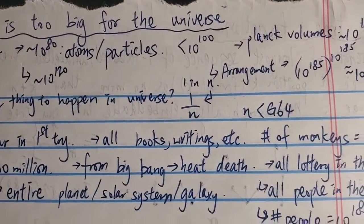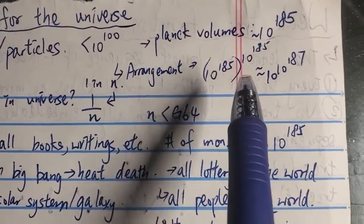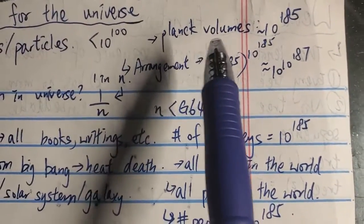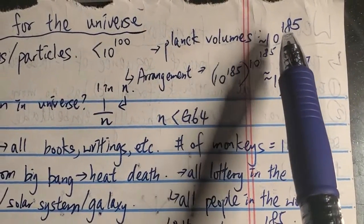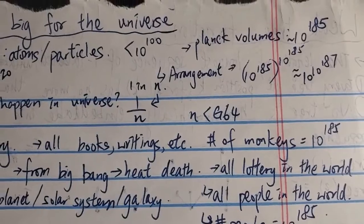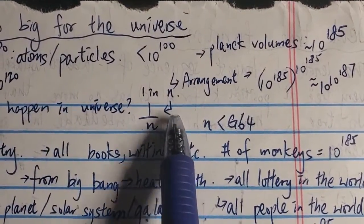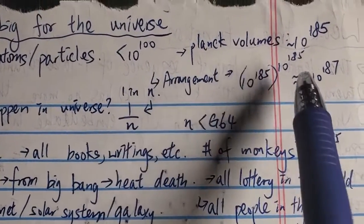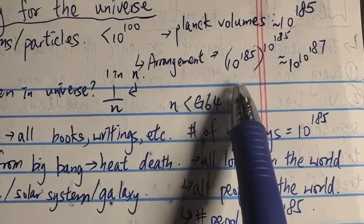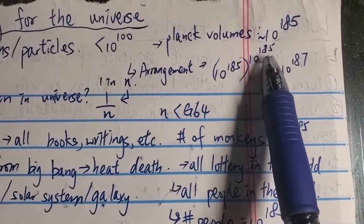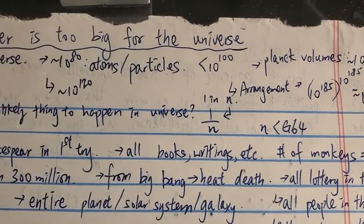That's slightly bigger than a googol. The smallest volume ever defined in physics is called a Planck volume. If you fill the whole universe with Planck volumes, it will be around 10 to the 185 Planck volumes. This number is way smaller than Graham's number. In terms of the number of arrangements of all these Planck volumes, if you allow repeating, there will be around 10 to the 185 to the power of itself — again way smaller than Graham's number.